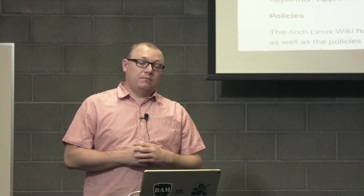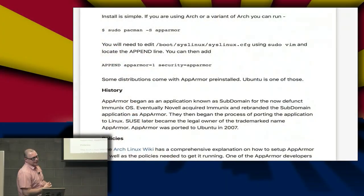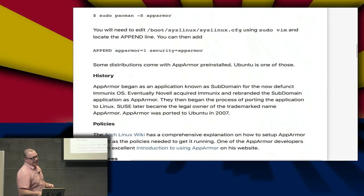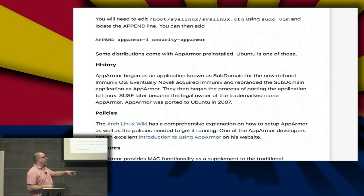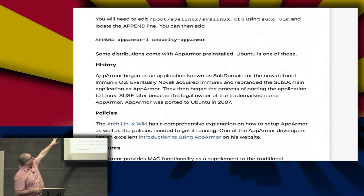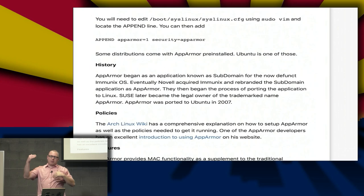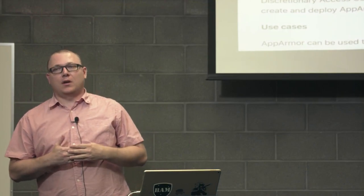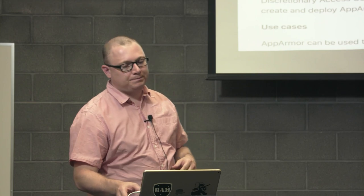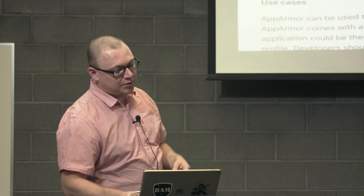I use Manjaro — big fan. So: sudo pacman -S apparmor. Then you need to edit /boot/syslinux/syslinux.cfg with sudo vim. There's an append line where you can add apparmor=1 security=apparmor right on that append line. Upon doing so, when you reboot your box you should have access to AppArmor. Manjaro doesn't come with AppArmor pre-installed, but I like AppArmor. Ubuntu does come with it pre-installed.